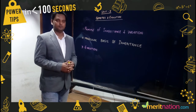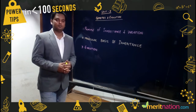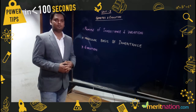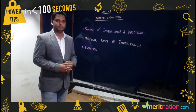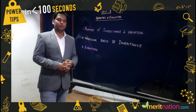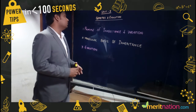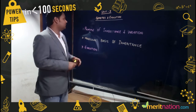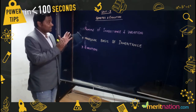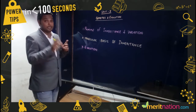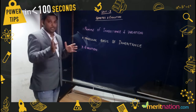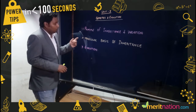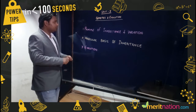We know that Genetics and Evolution is an important chapter since it carries 18 marks. What kind of questions can come from this unit? So as you said, it consists of 18 marks, and this unit is very important because it has three chapters: Principles of Inheritance and Variation, Molecular Basis of Inheritance, and Evolution.